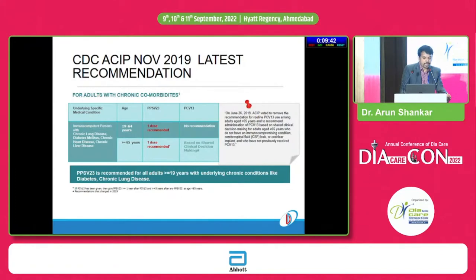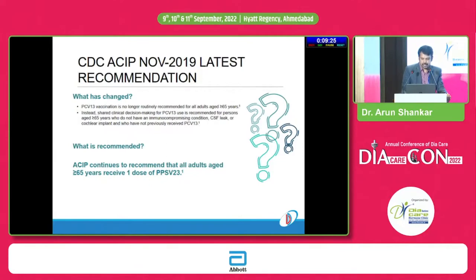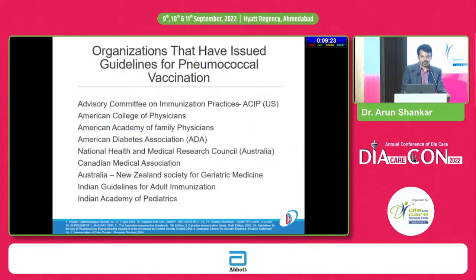The key difference in current guidelines is that PCV vaccination is no longer routinely recommended for adults aged more than 65 years. Instead, shared clinical decision-making is recommended for usage of PCV wherever indicated. Many organizations recommend the usage of pneumococcal vaccines for diabetes patients.